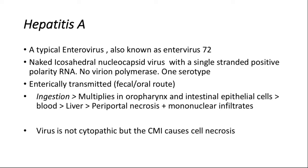Hepatitis A virus spreads mainly by the fecal-oral route. There are always outbreaks associated with contaminated food and water, and humans appear to be the major natural host. The fecal-oral route is the major mode of spread, and hepatitis A virus particles can be demonstrated in the feces by electron microscopy. There is no chronic infection with hepatitis A virus, as well as with hepatitis E virus. It is initially an IgM antibody response, followed by IgG antibody response, which usually gives lifelong immunity post-infection. There is no chronic infection and no carrier state with hepatitis A virus.